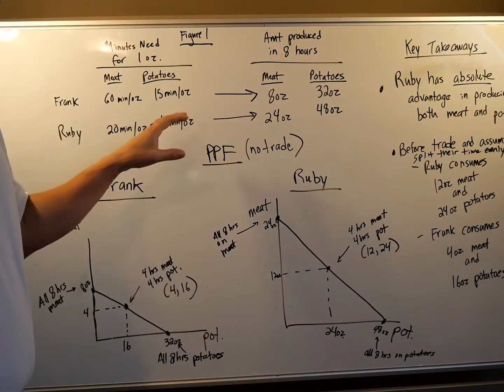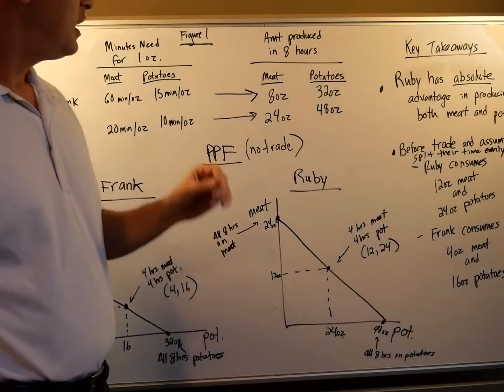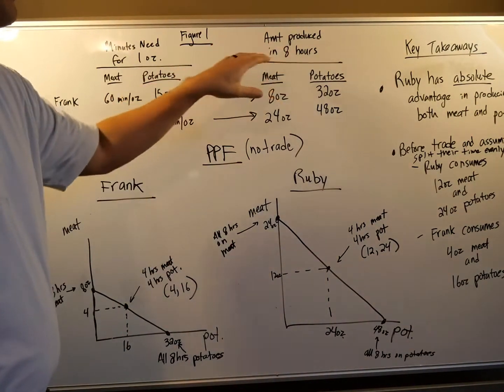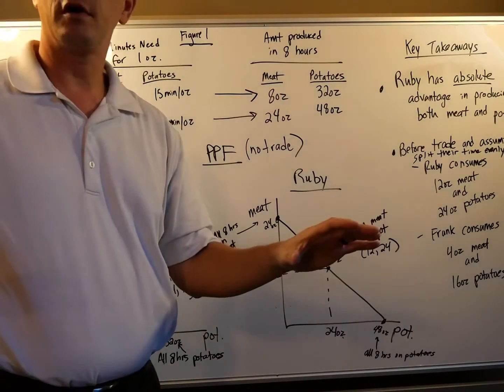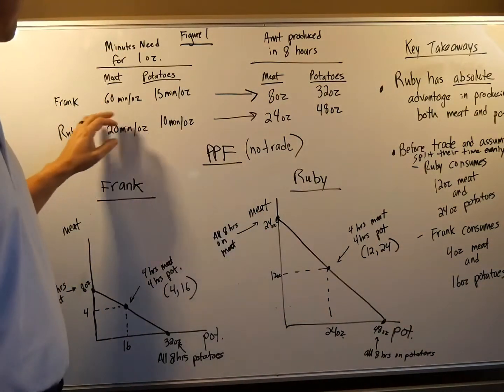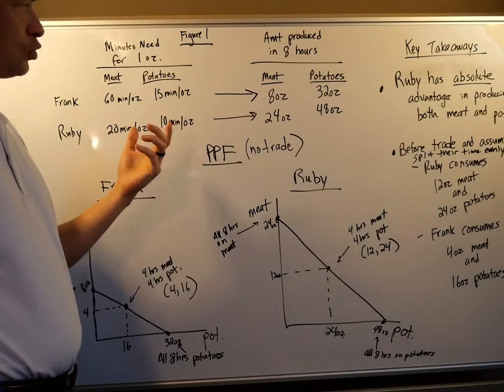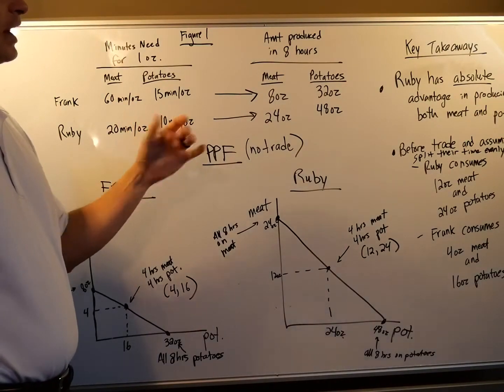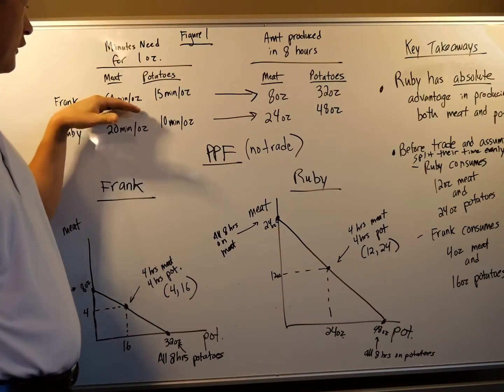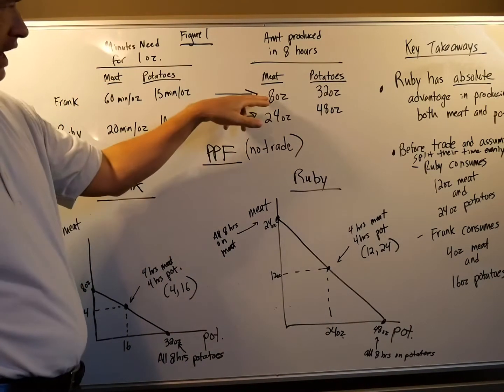What I want to do here is let's say this is pioneer times, it's rough living, it's hard life. Let's look at the amount of meat and potatoes they can produce in eight hours. Let's just assume that their limited scarce resource of time is eight hours in this experiment. So Frank, he was at 60 minutes to make an ounce. So that's an hour, an ounce an hour. So eight hours, eight ounces.